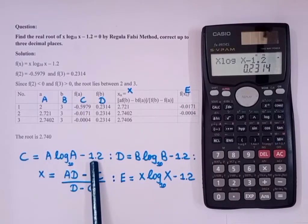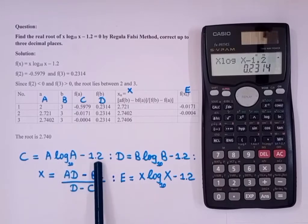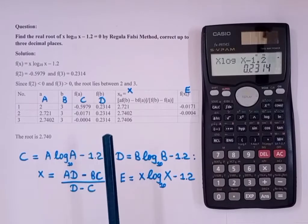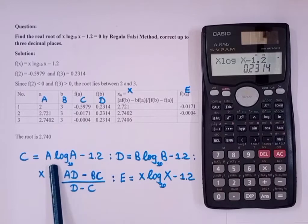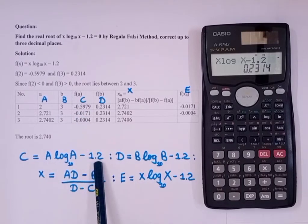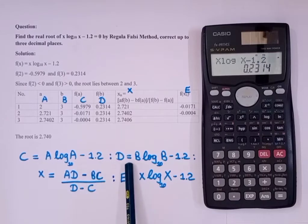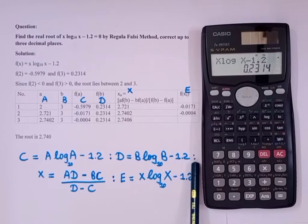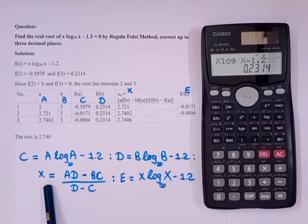Firstly, we'll input this: C equals a log a minus 1.2. As you can see in the question, it is x log x minus 1.2, so we're writing that as a log a minus 1.2. Then D equals b log b minus 1.2.